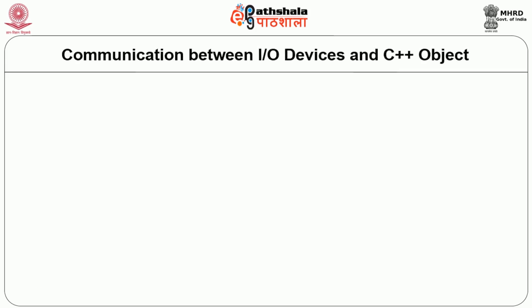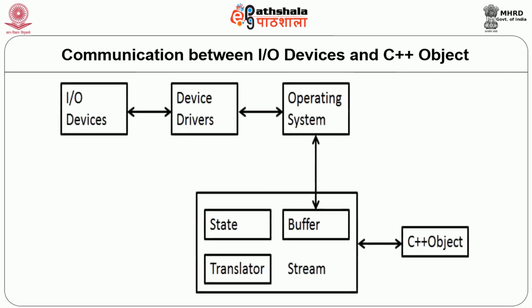The communication between IO devices and the C++ objects in the high level language program takes place via the operating system. We have device drivers — device drivers actually talk to the devices and the operating system, and the operating system provides the data to the stream of the C++ class, which is associated with the C++ object.